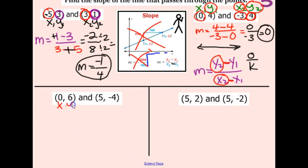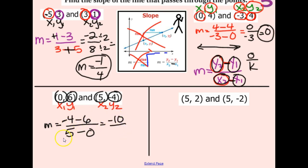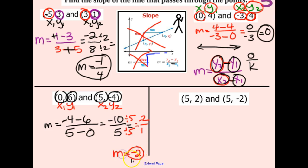Two more. I'll label my points: first point x, y - gets ones; second point x, y - gets twos. Plug into the equation. y2 is negative four, minus y1 which is six. On the bottom, x2 is five, minus x1 which is zero. Negative four minus six - same sign, add - gives negative ten on top. Five minus zero is five on the bottom. Simplify: ten divided by five is two, so our slope m is negative two.